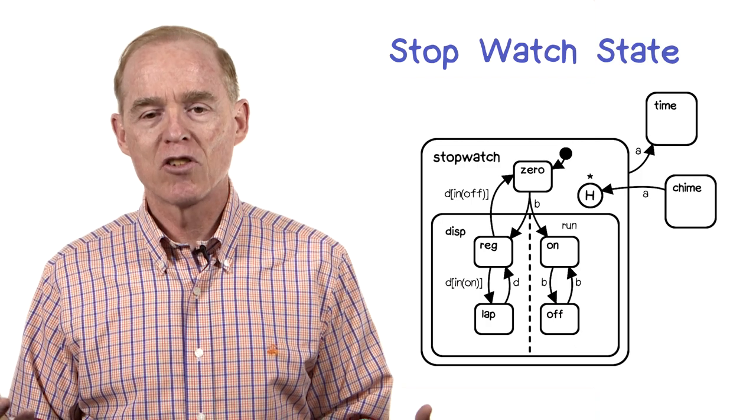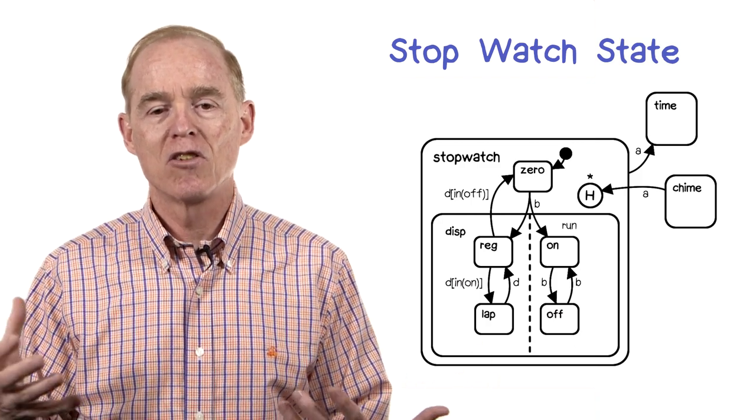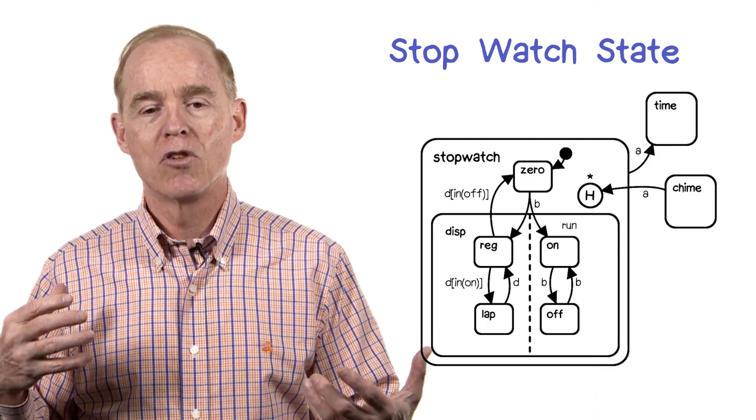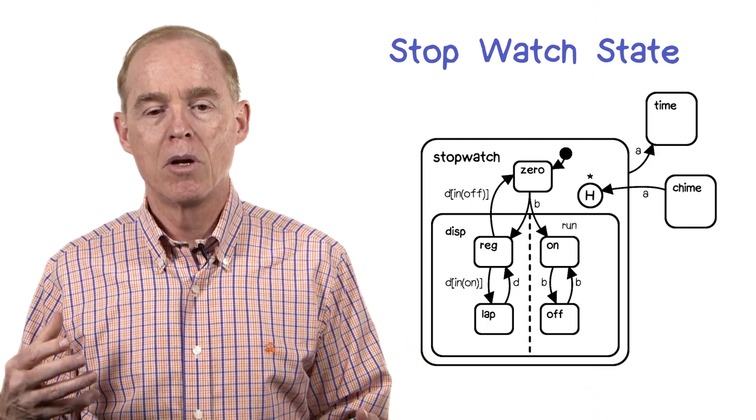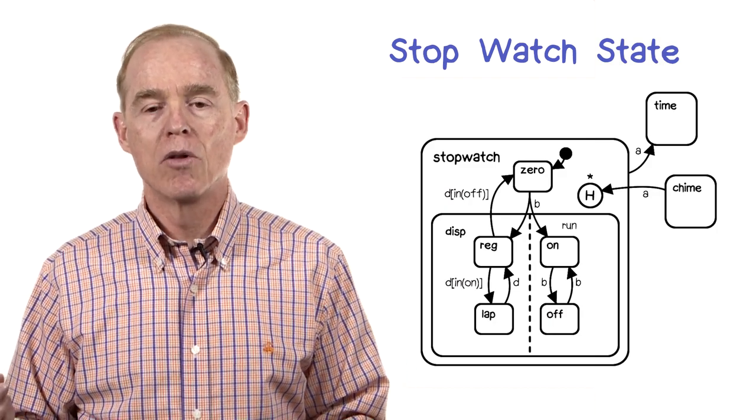Here's an example of the stopwatch state. It makes use of a history state. You'll notice there it had its own default state for the stopwatch itself in the zero step. There's also a guarded transition using the in keyword that I mentioned before.